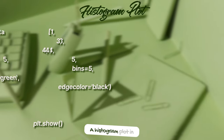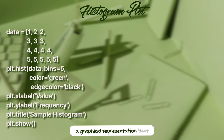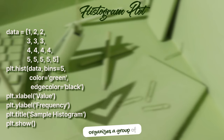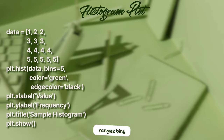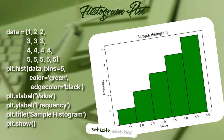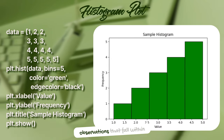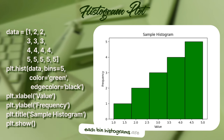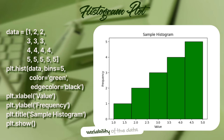A histogram plot in Matplotlib is a graphical representation that organizes a group of data points into specified ranges, called bins. It shows the frequency distribution of a dataset, with each bar representing the number of observations that fall within each bin. Histograms are useful for understanding the distribution, central tendency, and variability of the data.